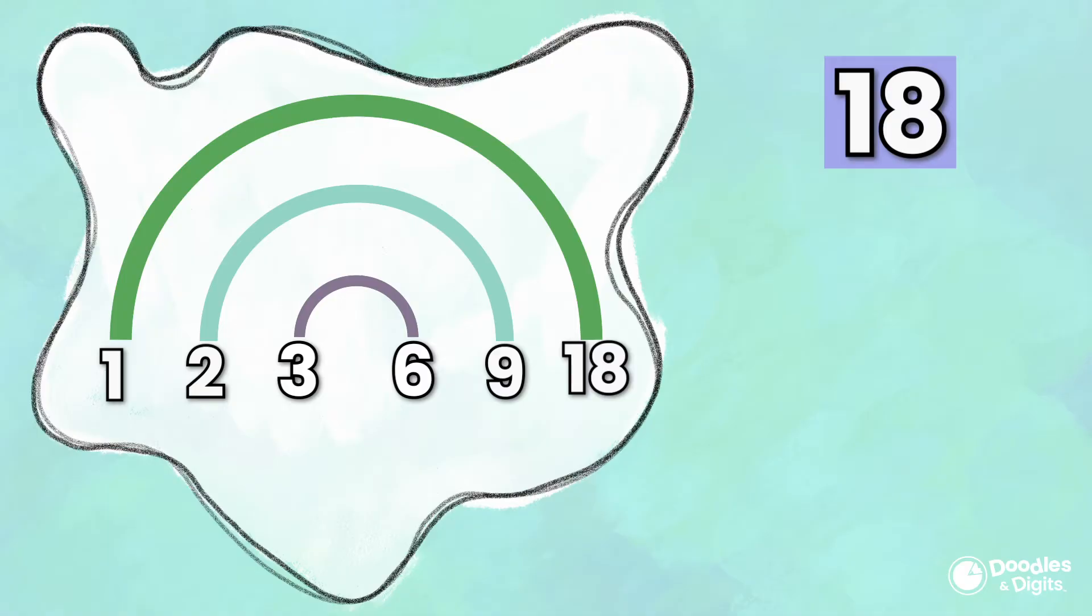Let's try the number 4. Hmm, no, there is nothing times 4 that is a whole number that equals 18. What about 5? 5 is also not a factor. 7? 7 is also not a factor. 8? No, 8 is also not a factor. So our factors of 18 are 1, 2, 3, 6, 9, and 18.